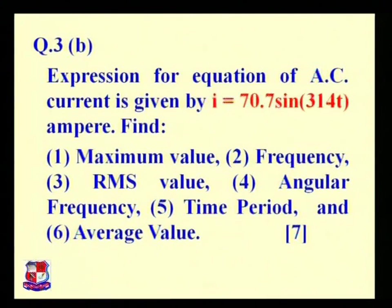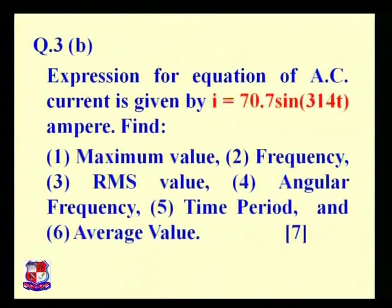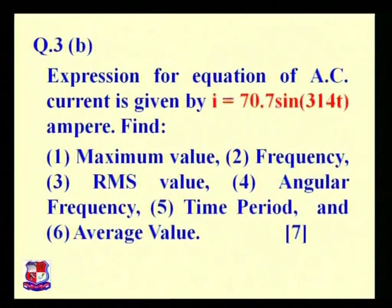Now one important example from AC circuits. The expression for the equation of AC current is given by I equal to 70.7 sin(314t) ampere. We have to find out six values: maximum value, frequency, RMS value, angular frequency, time period, and average value.